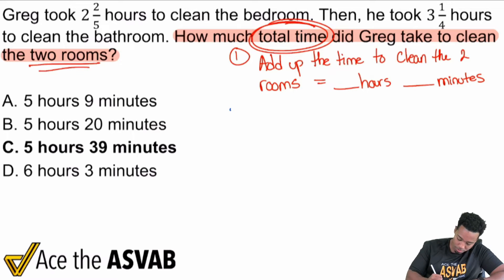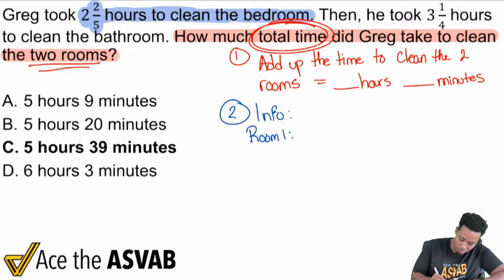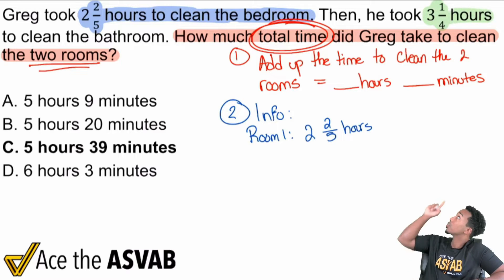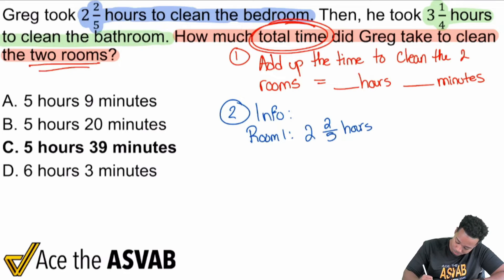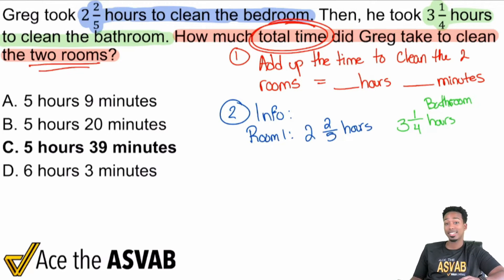The information tells us over here, the info we have is room one tells us right over here, 2 and 2/5 hours to clean the bedroom. Sounds good. So 2 and 2/5 hours for the bedroom. Then we see over here, it says 3 and 1/4 hours to clean the bathroom. So right over here, 3 and 1/4 hours for the bathroom. Must be one mess in there, right? And so we're looking at this and we're saying, well, what did we say we're going to do again? There's our plan. We're going to add up those two times that we have over here, one for the bedroom, one for the bathroom, and then we're done.